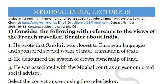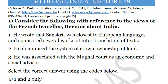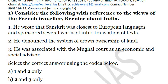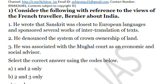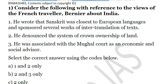Let's start our discussion. Today is lecture number 18 of Medieval India. The first question is: consider the following with reference to views of French traveler Bernier about India. First, he wrote that Sanskrit was closest to European languages and sponsored several works of inter-translation of texts. Second, he denounced the system of crown ownership of land. Third, he was associated with the Mughal court as an economic and social advisor. Only one statement is correct, and that is the second. The answer is C.